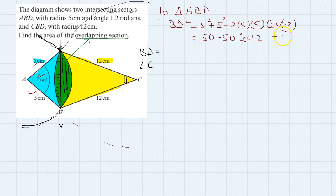That equals 31.882, so BD equals the square root of 31.882, which is 5.646, approximately 5.65.